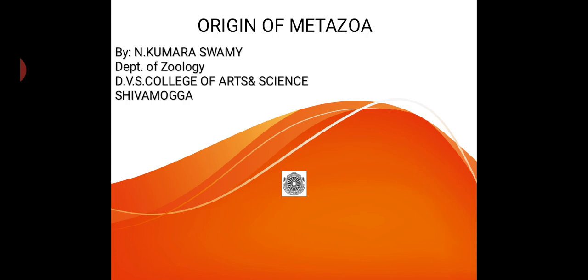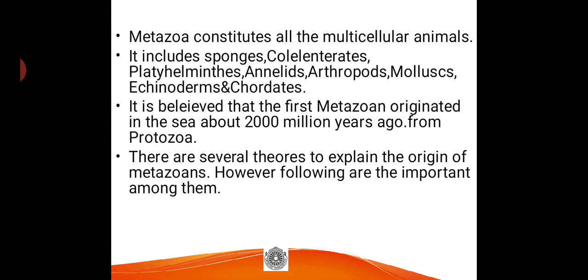Metazoans are multicellular animals — the term itself suggests that 'meta' means many and 'zoa' refers to animals. Kingdom Animalia is divided into two sub-kingdoms: sub-kingdom Protozoa and sub-kingdom Metazoa. Sub-kingdom Protozoa includes only unicellular animals like protozoans, whereas sub-kingdom Metazoa comprises all types of multicellular animals.